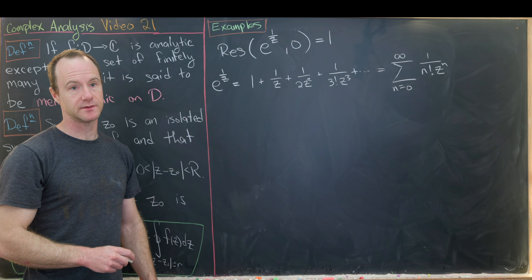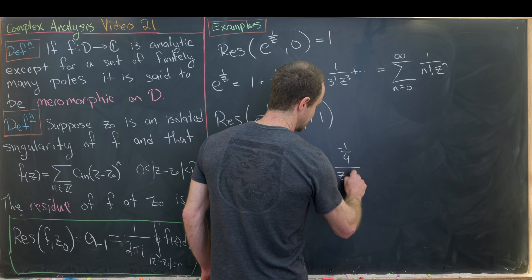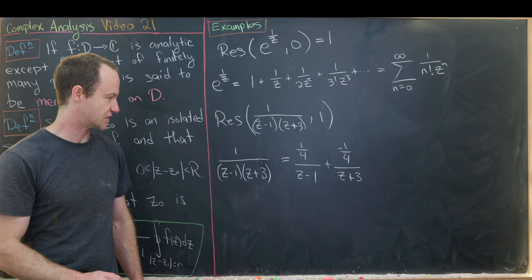Now let's find the residue of 1/((z−1)(z+3)) at 1. We expand using partial fractions, and we get (1/4)/(z−1) plus (−1/4)/(z+3).